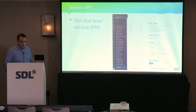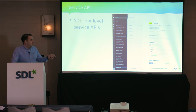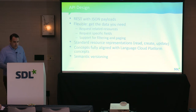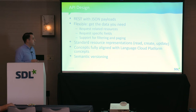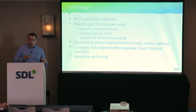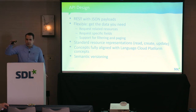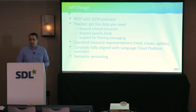In terms of the service API, at current date we have about 55 microservices with more than 55 low-level service APIs used internally and documented. For API design, we're using RESTful APIs with JSON payloads — standard practice. We're making them flexible so you can request only the data you need, with support for filtering and paging to reduce the amount of data you need to process.